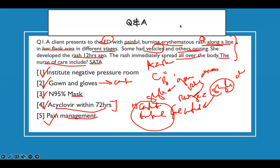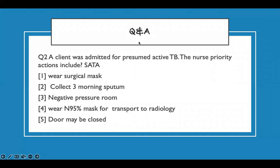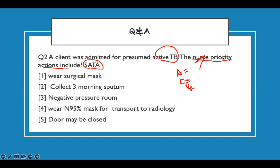That's how you answer that sort of question — straightforward without any problem. Now let's do select all that apply with prioritization. The next question has the same process. The action is 'next priority action includes.' The case is short: a client presents with presumed active TB. We have an active TB patient — what is the priority action?